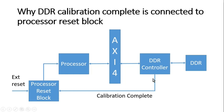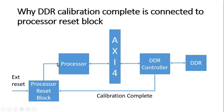Before telling you the crux of this video — why we connect the calibration complete signal to the processor reset block — let me explain the disadvantage. If for any reason there is no calibration success between the DDR and DDR controller, this calibration complete signal will remain low. There can be many reasons: the DDR is not connected, loosely connected, or the clock applied to the DDR controller is not properly configured. In those cases, the calibration complete signal will always be zero and the processor reset block will always assert a reset, so the processor will remain in a reset state.